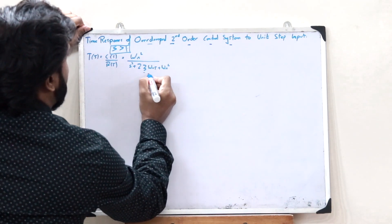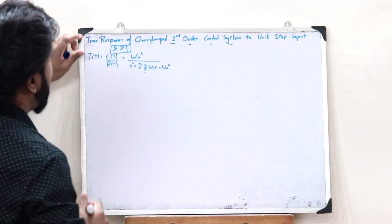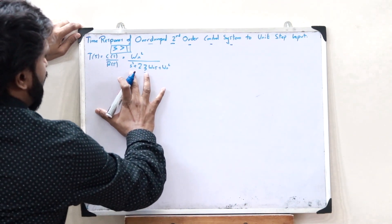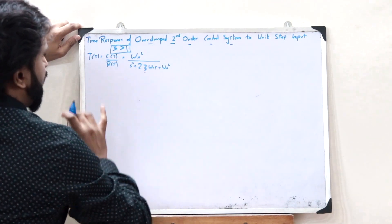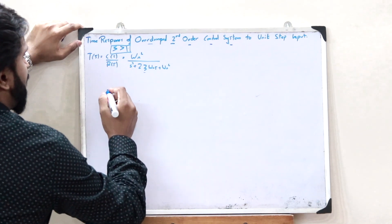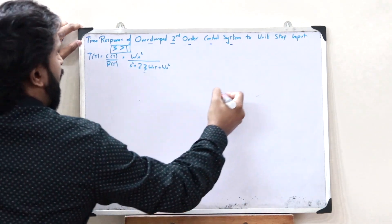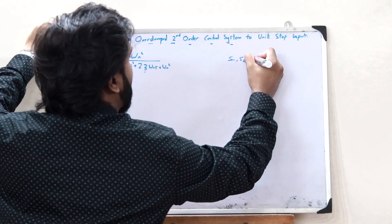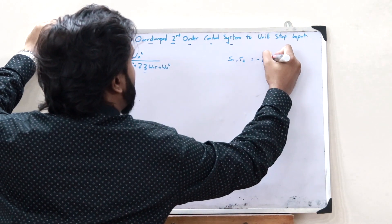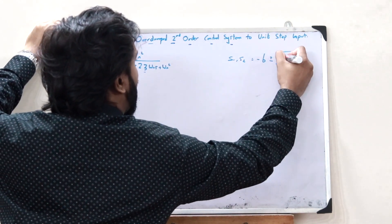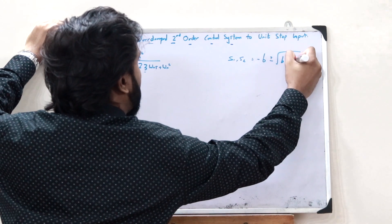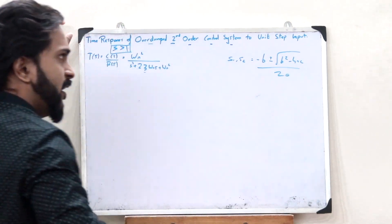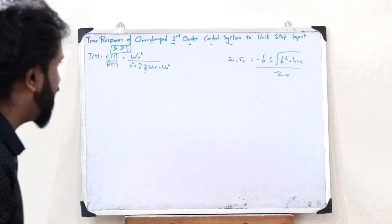In this particular denominator, let us factorize it. For this particular quadratic equation, the roots are given by the formula: if the roots are S1 and S2, they are given by minus B plus or minus root of B squared minus 4ac, divided by 2a. Basic 9th standard mathematics.